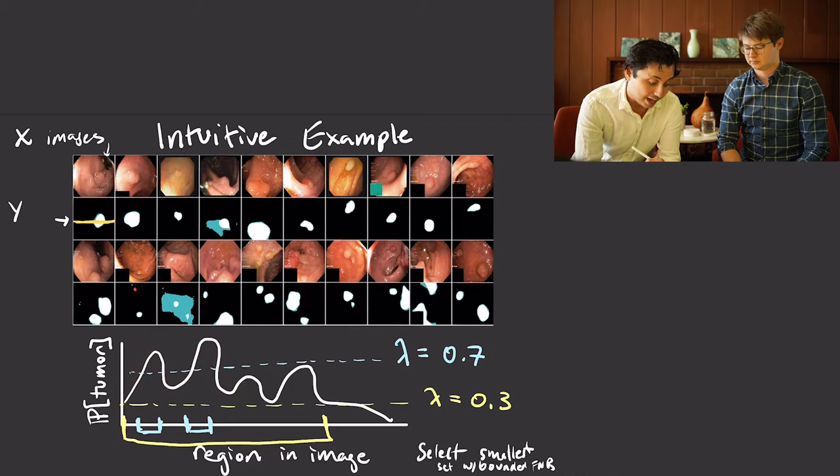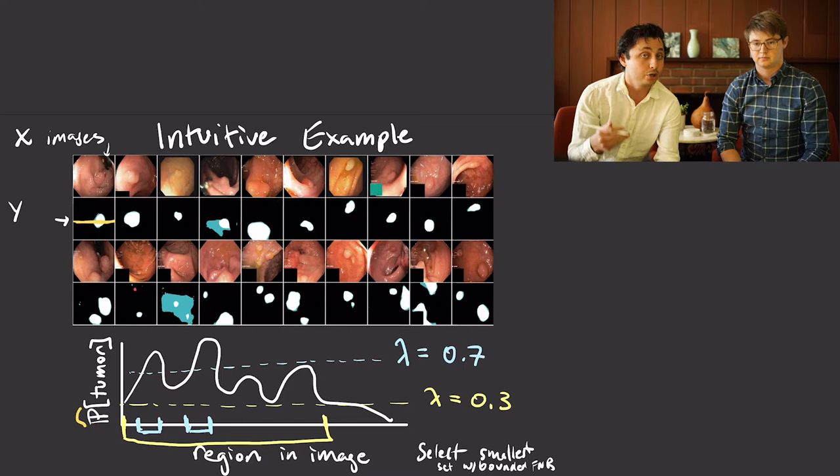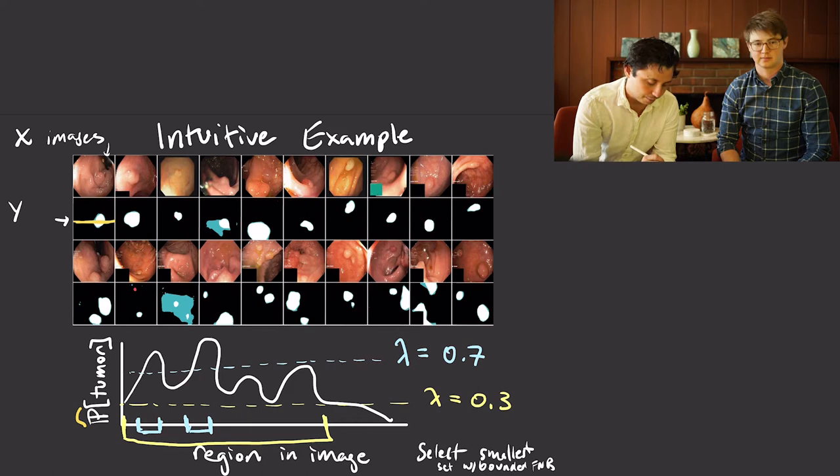This should really be called P-hat tumor — it's the estimate of the model, not the true probability. The model doesn't know the actual probability that a pixel comes from a tumor; it's just an estimate, and we need to calibrate that estimate. We're going to calibrate it in a way that guarantees you contain most of the tumor — that's what we mean by saying we control the false negative rate. We're going to do the obvious thing, but in a rigorous way: take the model outputs and threshold them at some level lambda.